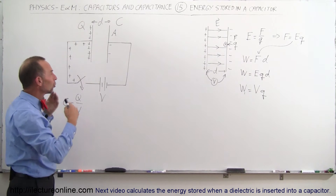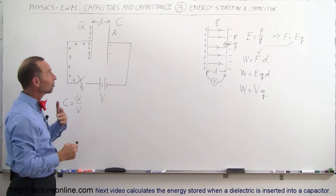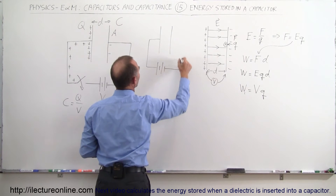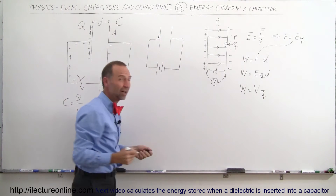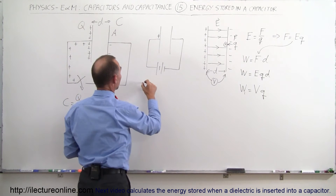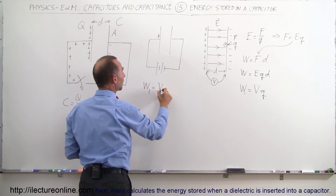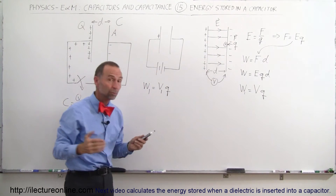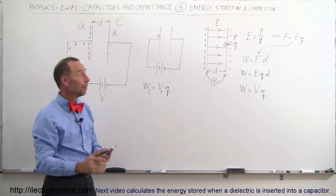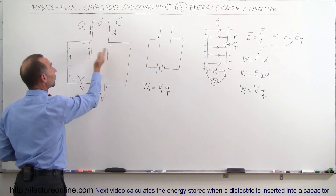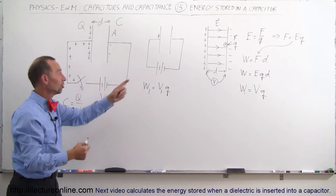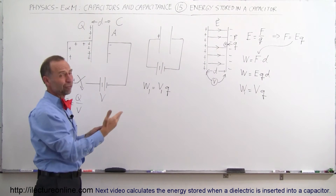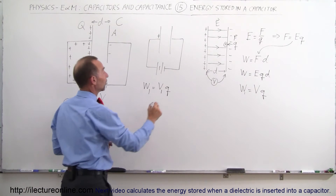So how much work does it take to put all the charges on there? When we place the first charge onto the capacitor — connected to the battery — how much work does that take? The amount of work to put the first charge there is equal to the potential difference when we place the first charge, times Q. The potential difference at that point is zero, because the potential difference simply depends on how much charge is across the capacitor, and if there's no charge, there's really no potential difference. So the work for the first charge is zero.